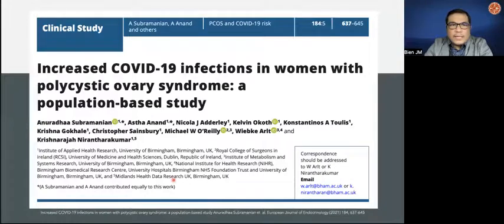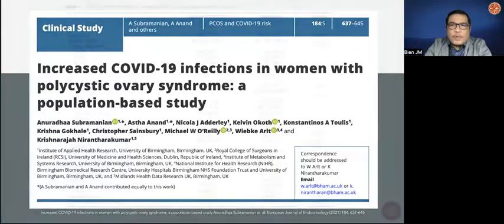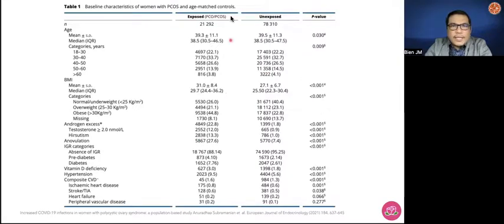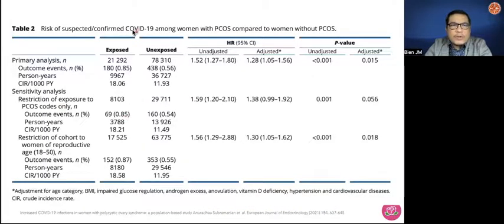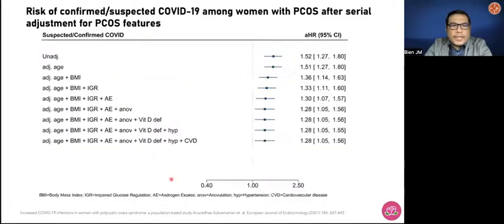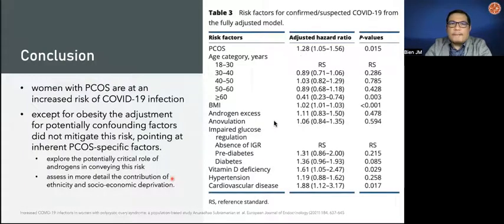Since we've been talking about COVID and we're still in the pandemic, there is increased COVID-19 infection in women with polycystic ovary syndrome — at least this is what was seen in a population study among a primary care database in the United Kingdom. Patients with PCOS and those without PCOS were matched by age, and the sensitivity analysis for risk of suspected and confirmed COVID-19 among patients with PCOS versus those without PCOS is actually seen more in those patients of reproductive age. The presence of insulin resistance may also increase the risk of COVID-19 infection, particularly in women with PCOS compared to those who are not.